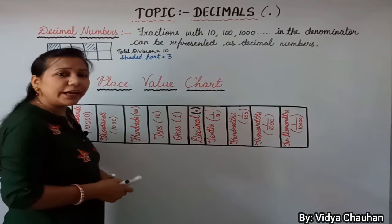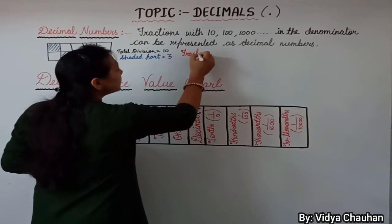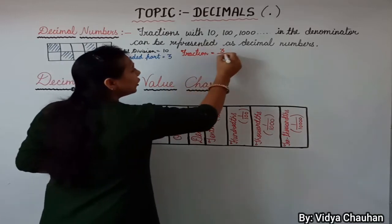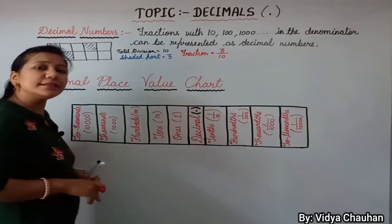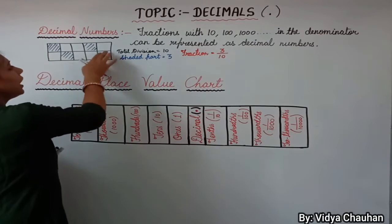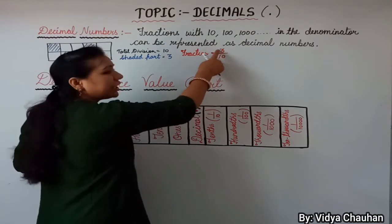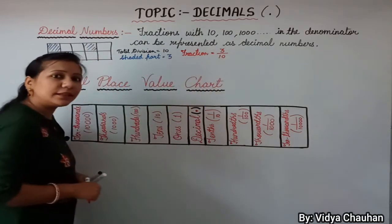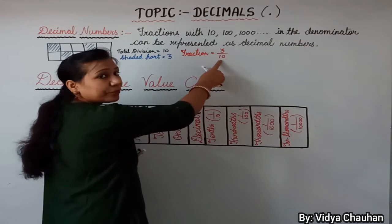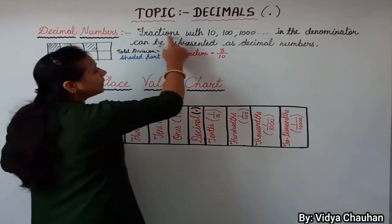If you have to write its fraction form, the fraction is the number of shaded parts over the total number of parts, that is 3 upon 10. So the fraction form for this division — out of 10 boxes, 3 are shaded — is 3/10. Since the denominator is 10, we can express this number in decimal form also.